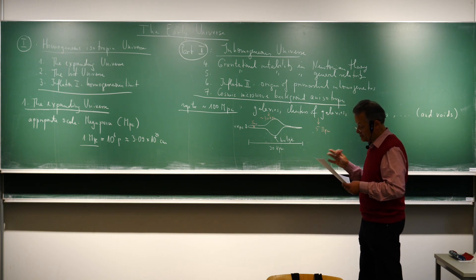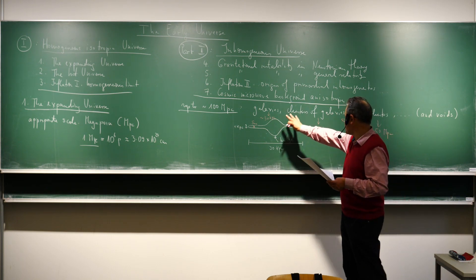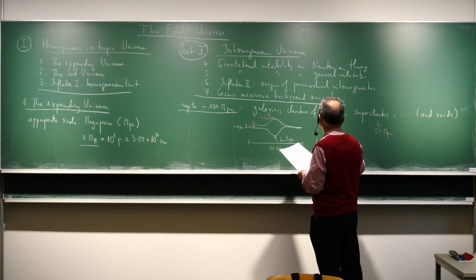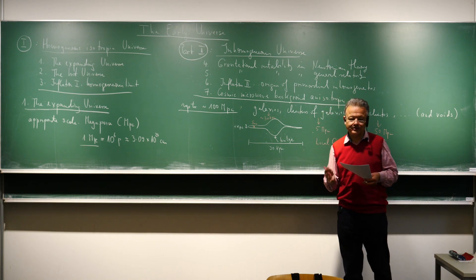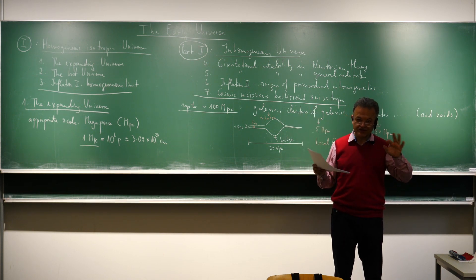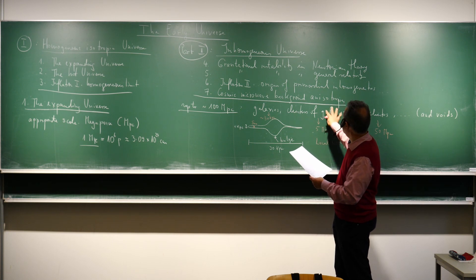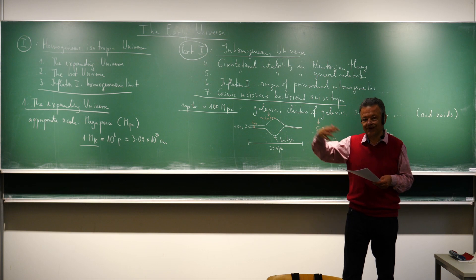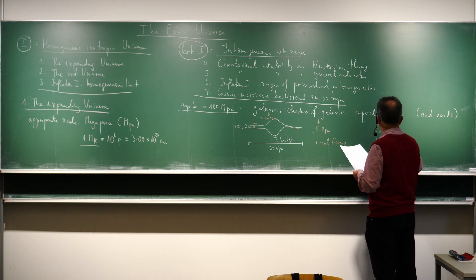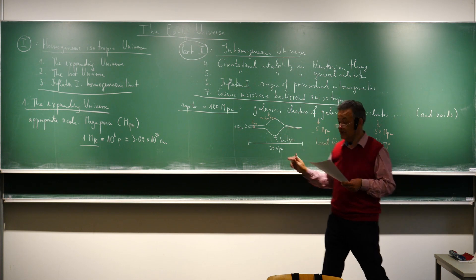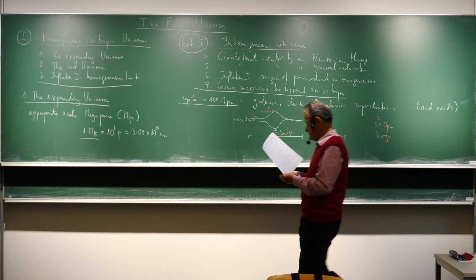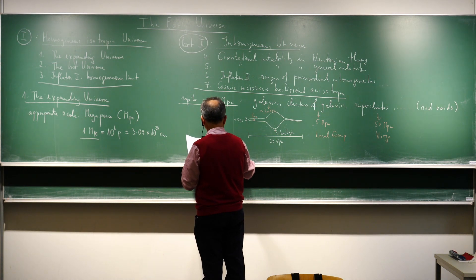Our galaxy belongs to a cluster called the local group. If you look it up online you find nice three-dimensional pictures with dozens of members, including the Andromeda galaxy and many smaller galaxies. Our local group belongs to the Virgo supercluster, named because we see it in the direction of the constellation Virgo. We know this mainly from redshift surveys. Above this scale we have a repetition of the structure.